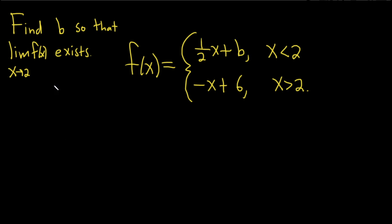So in order for this limit to exist, the one-sided limits have to be real numbers, they have to exist, and they have to be equal. So what we'll do in this problem is we'll just take both one-sided limits as x approaches 2, and then we'll just make them equal to each other and see what happens.